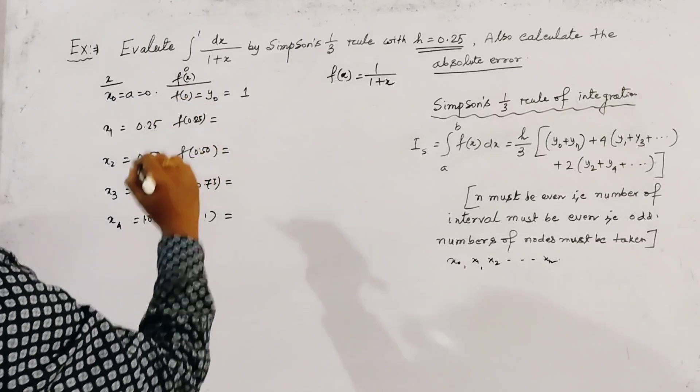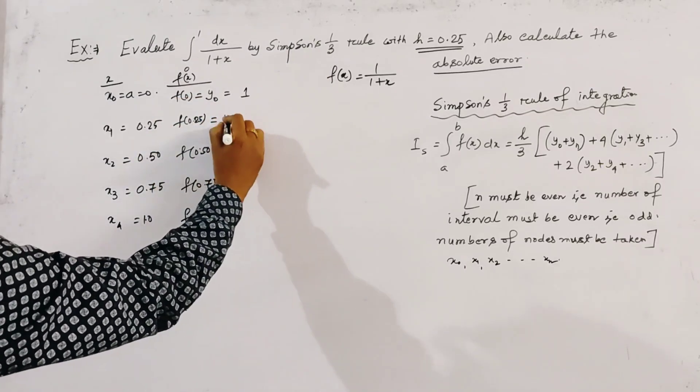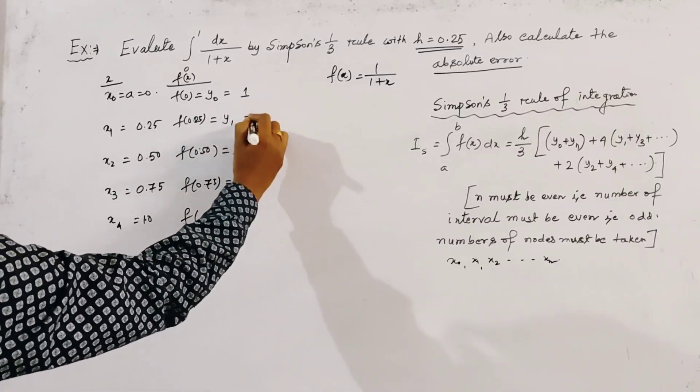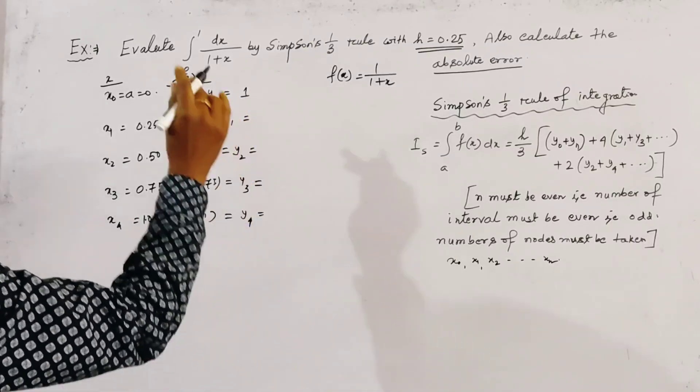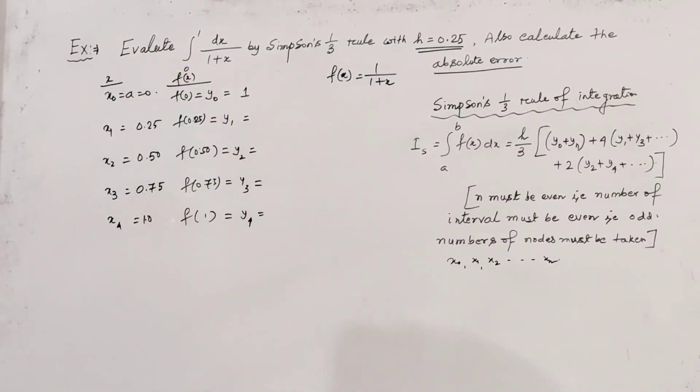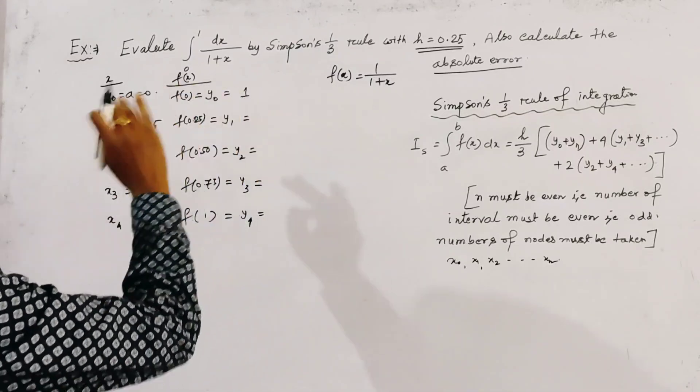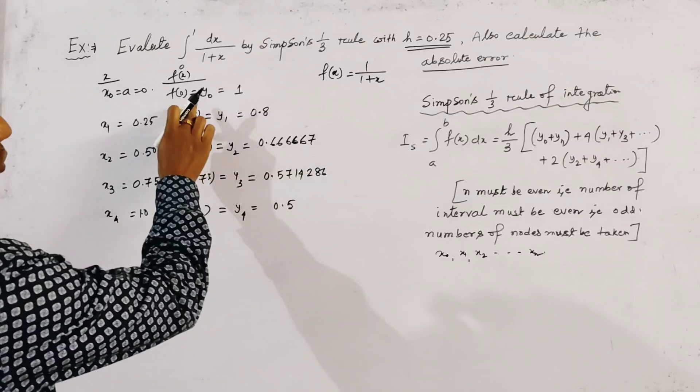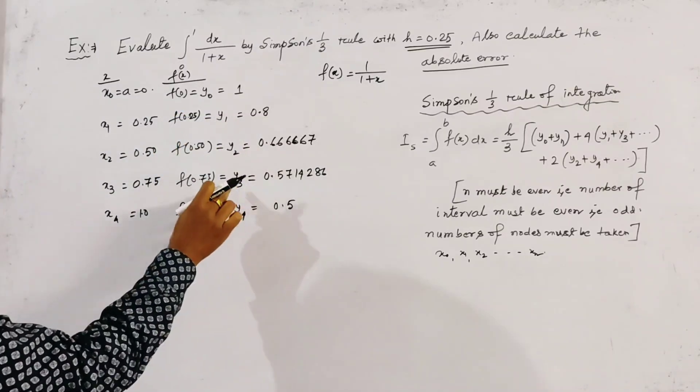The others are y₁, y₂, y₃, and y₄. We calculate these four values directly by calculator and write them here. We get all the values of y₀, y₁, y₂, y₃, y₄.